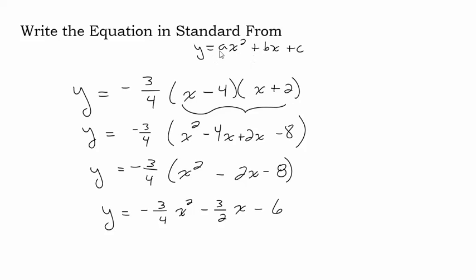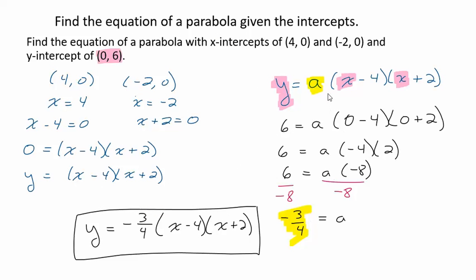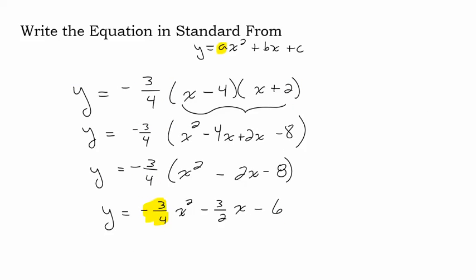I want you to notice here that in standard form, this a value is the same as it was when we were in factored form. Okay, so factored form would be y = a(x - one x intercept)(x - another x intercept). And that's the form we were in before.